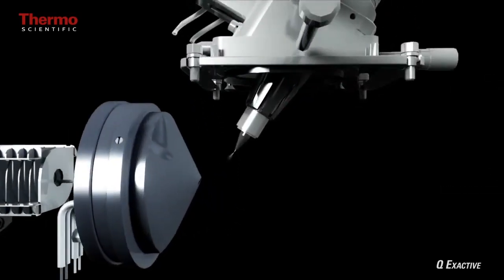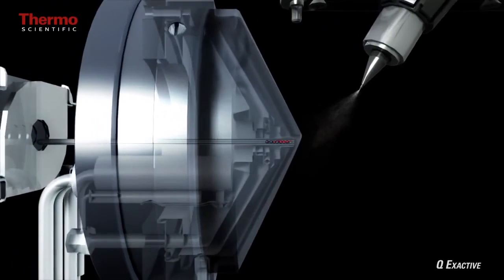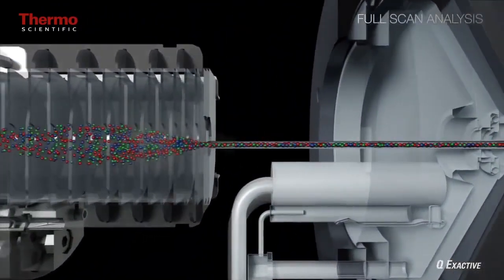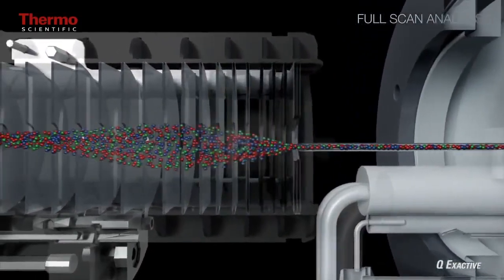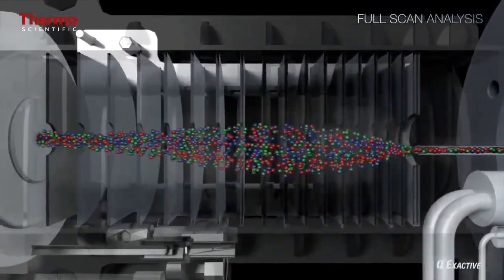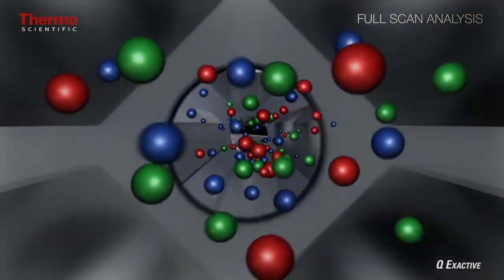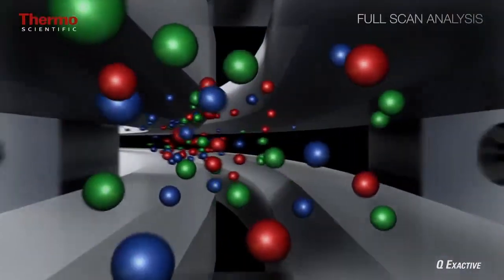In the full scan mode, ions are produced at the source. They are captured and focused for effective ion transmission using a variety of lenses. Uncharged neutral species at this point are filtered out using the bent flattopole.